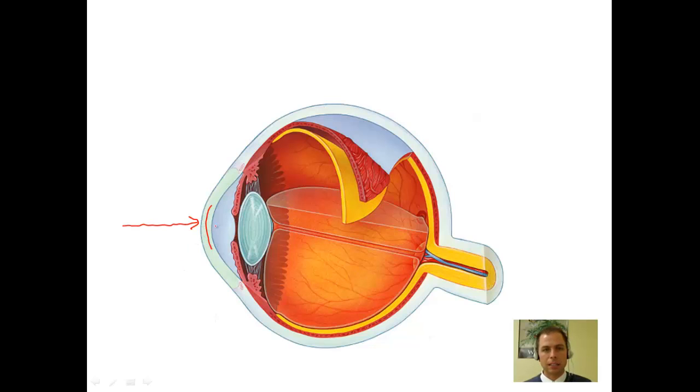And then as it continues into the aqueous through the pupil and interacts with the crystalline lens, the light then gets refracted in such a way where it will, at some point, arrive at some area on the posterior segment of what we refer to as the retina, shown in yellow.